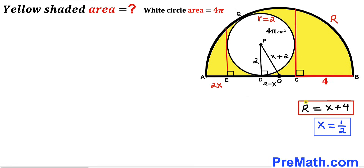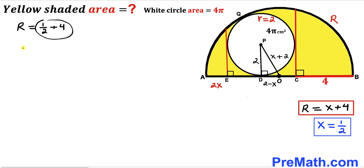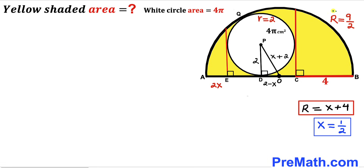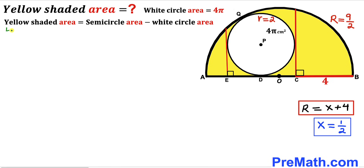Since uppercase R = x + 4, substituting x = 1/2 gives R = 1/2 + 4 = 9/2 cm. Thus the radius of the semicircle is 9/2 cm.